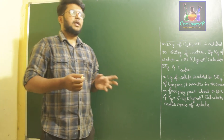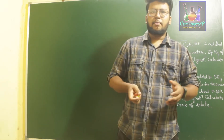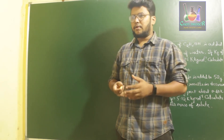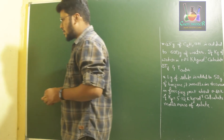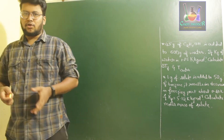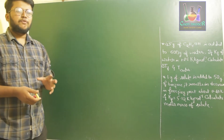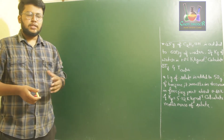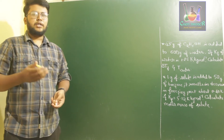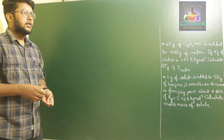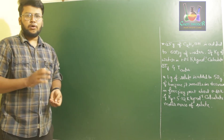Since we know from Class 11, whenever you add certain solutes to a solvent, its vapour pressure decreases. Now let us consider a liquid — that is nothing but the solvent which we are considering in this particular condition. If you take a pure liquid solvent and decrease its temperature, what happens is it has to convert itself to a solid component.